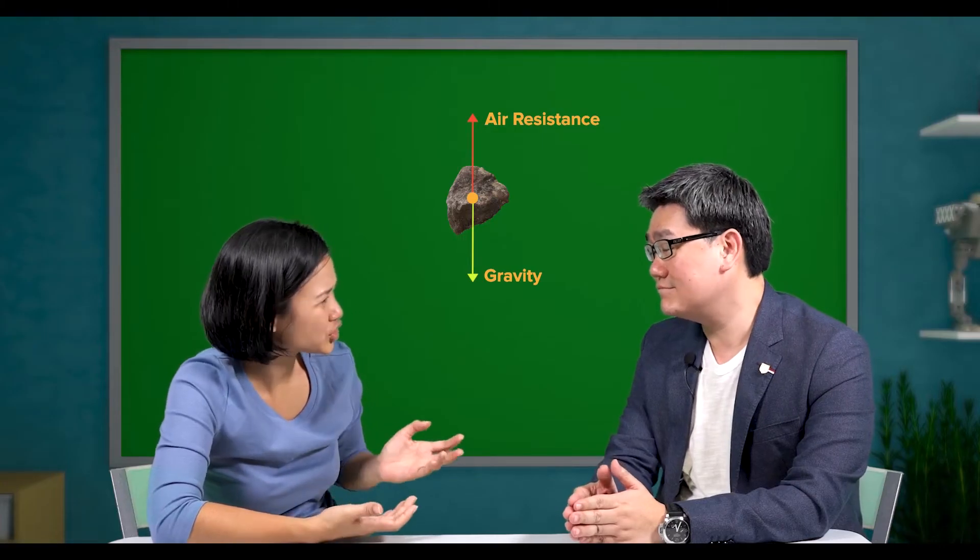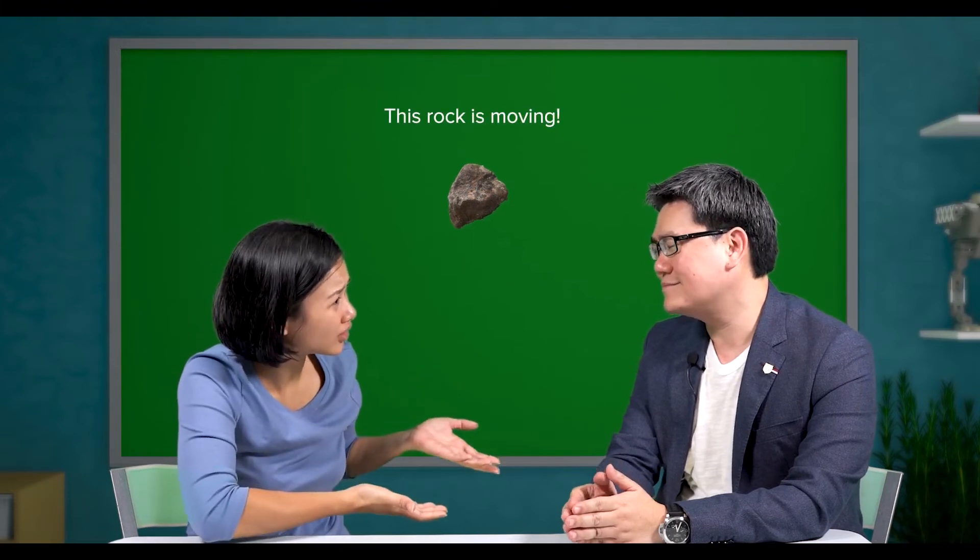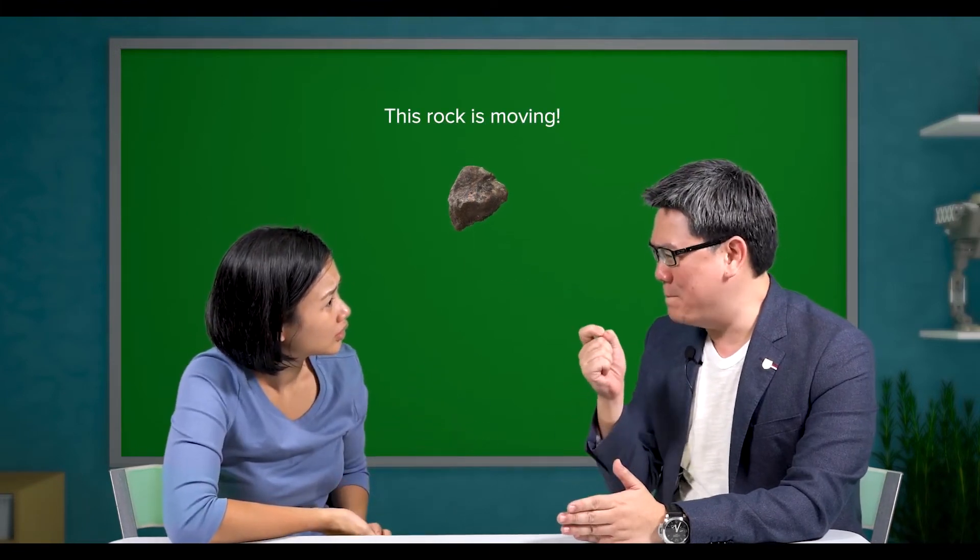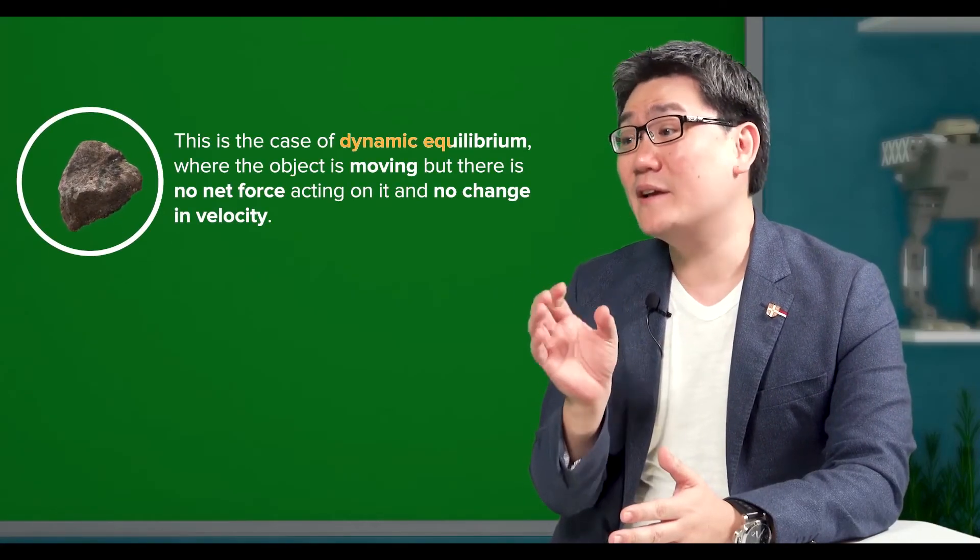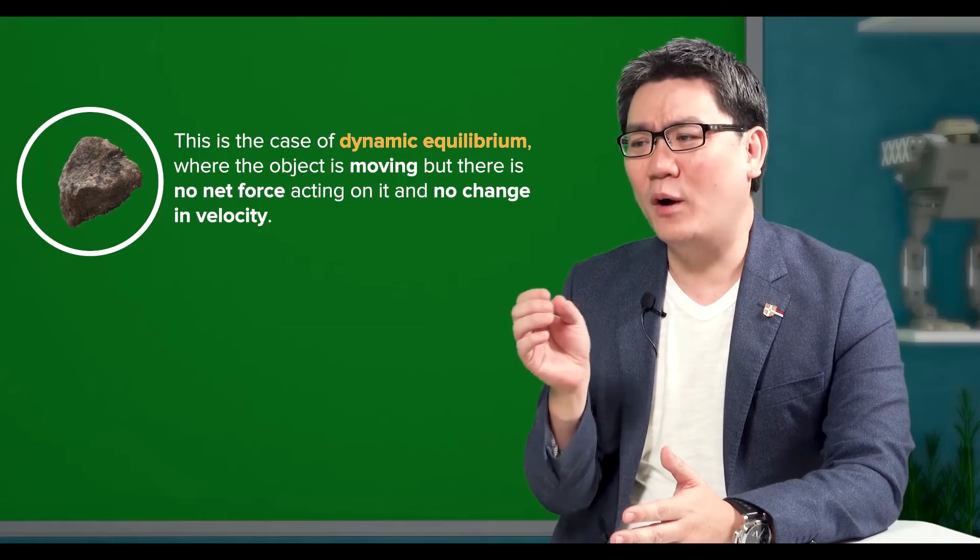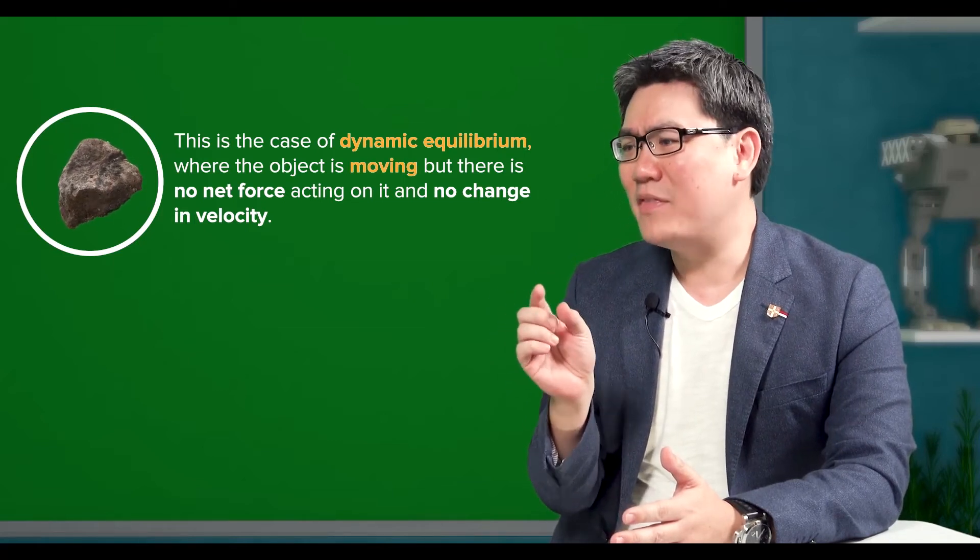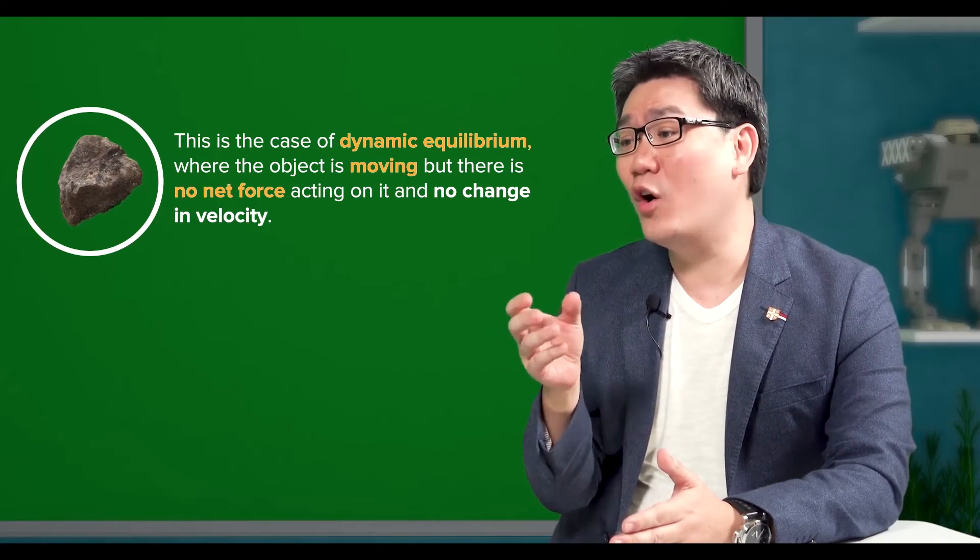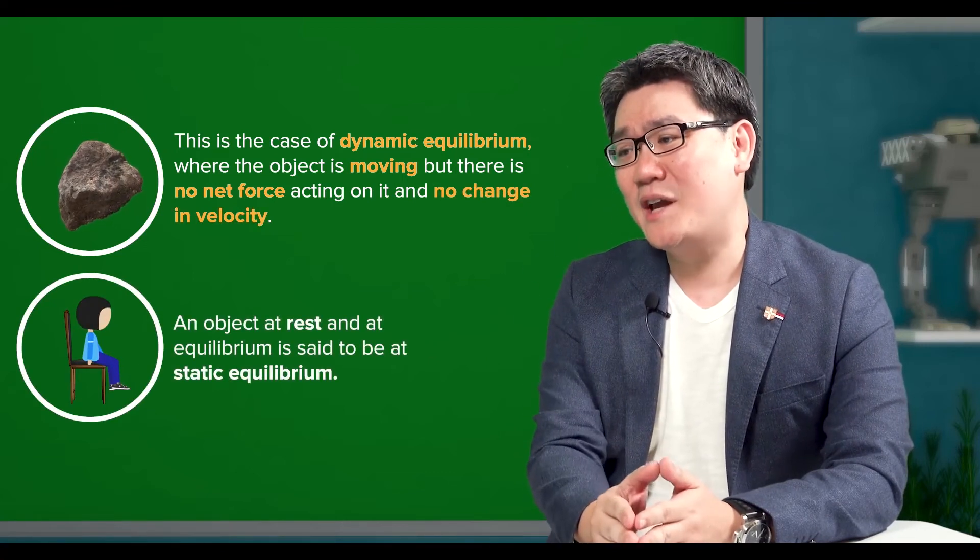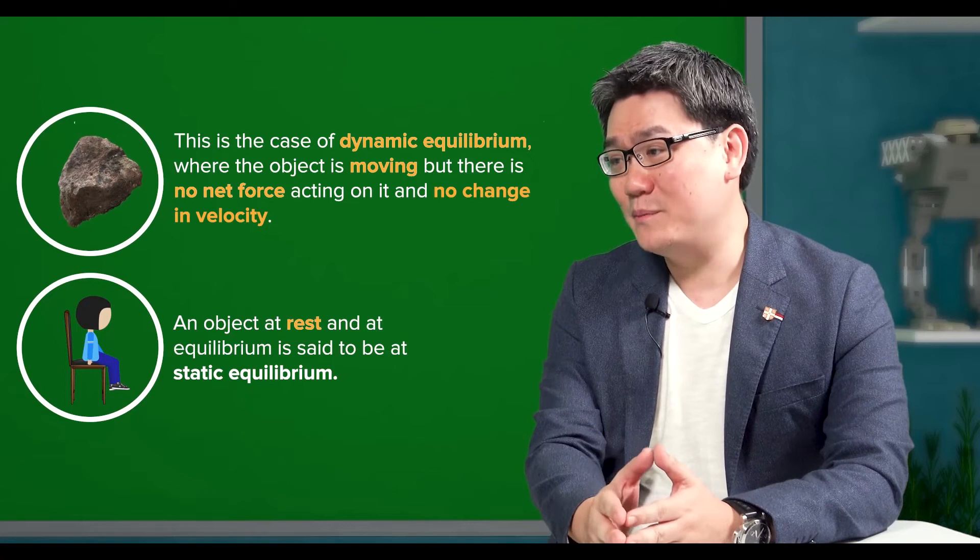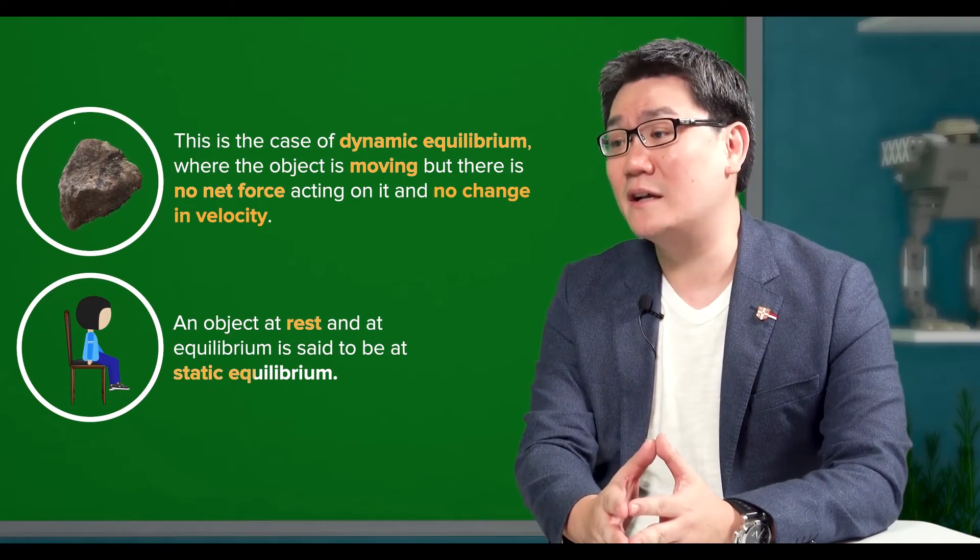But, teacher, this rock is moving. Aha! That's a major misconception. This is the case of dynamic equilibrium, where the object is moving, but there is no net force acting on it and no change in velocity. An object at rest and at equilibrium is said to be at static equilibrium.